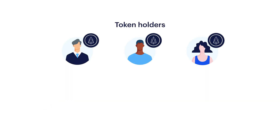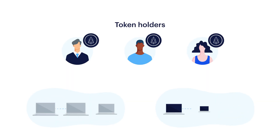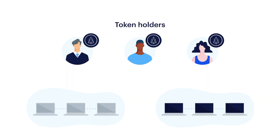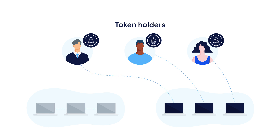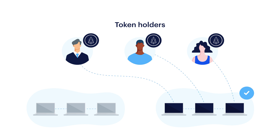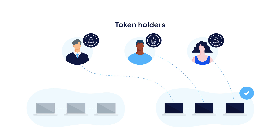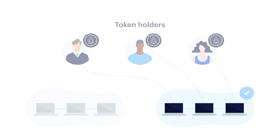With delegated proof-of-stake, computers don't compete over computational power. Instead, the network's users vote for the computers who they think are best qualified to run the network. This consensus model is designed to be faster and more energy efficient than proof-of-work.